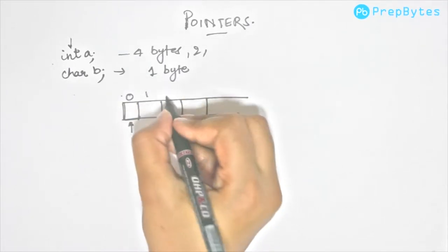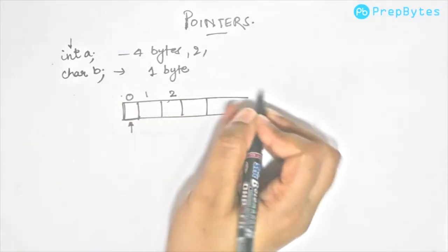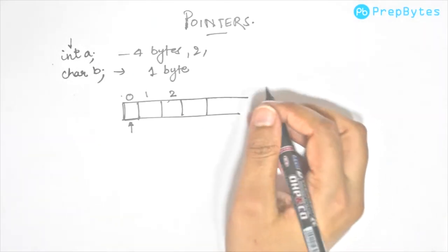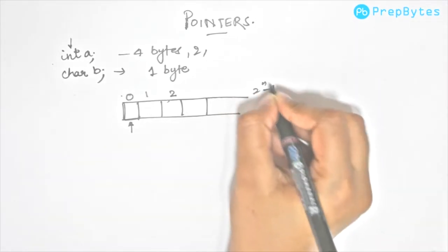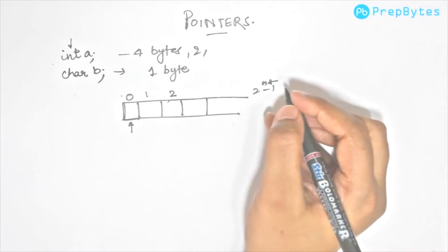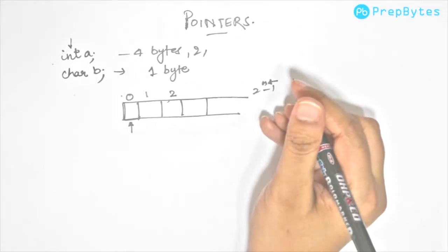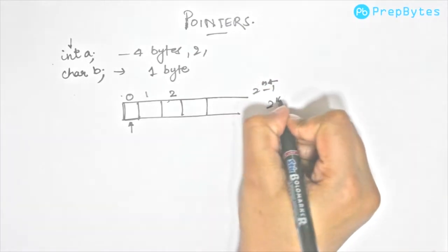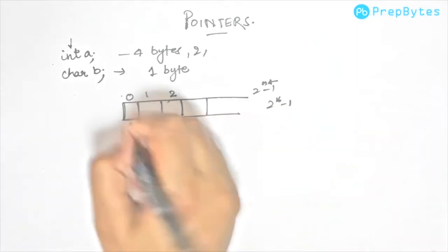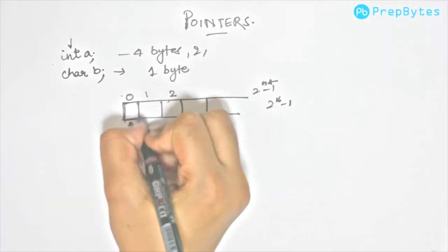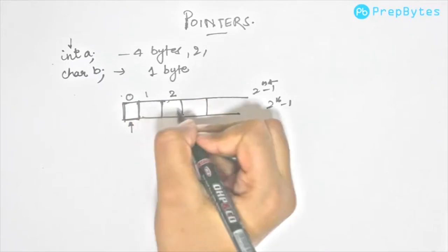Let's say this is 1 byte. It will have an address 0. The next byte might have address 1, 2, 3, and it continues till 2 to the power n minus 1, where n is the size of the memory. If it is a 16-bit operating system, it will be 2 to the power n minus 1. Every byte has a particular address.